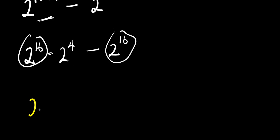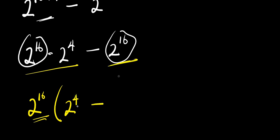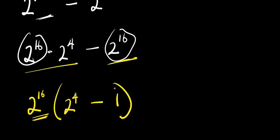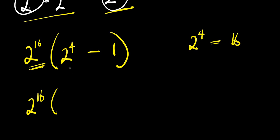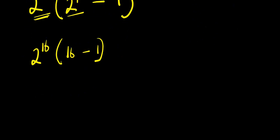Right now this is 2 to the power of 16, and this is 2 to the power of 16 — I can factor that out. I have 2 to the power of 16 times (2 to the power of 4 minus 1). Two to the power of 4 equals 16, like what we did earlier. So we have 2¹⁶ times (16 minus 1), which is 15.